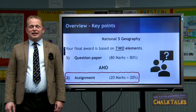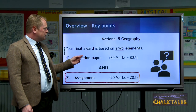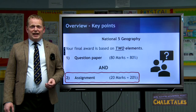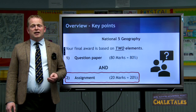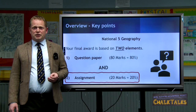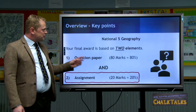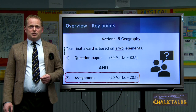There are two externally assessed components that you will complete, and the marks from these components are combined to create your overall final award. The first component is the question paper, worth a total of 80 marks or 80% of the overall course award. The second component — and the focus for this Chalk Talk — is the assignment, worth 20 marks and 20% of your overall course award.